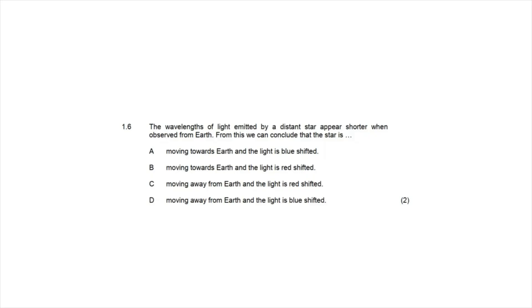Question 1.6: the wavelengths of light emitted by a distant star appear shorter when observed from Earth. This applies the Doppler effect: when a source moves toward the observer, waves bunch up and wavelength decreases. Shorter wavelengths correspond to blue light, so the light is blue-shifted. This only occurs if the star is moving toward Earth, making the correct answer option A.